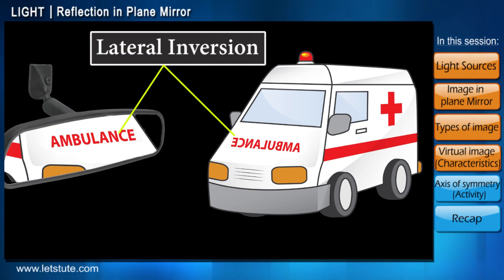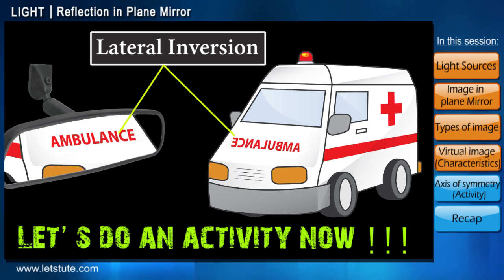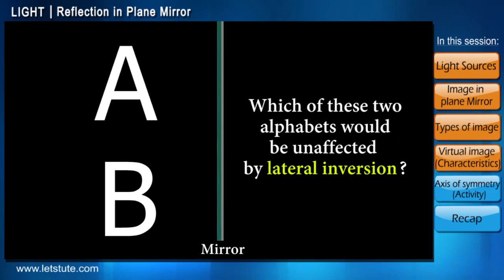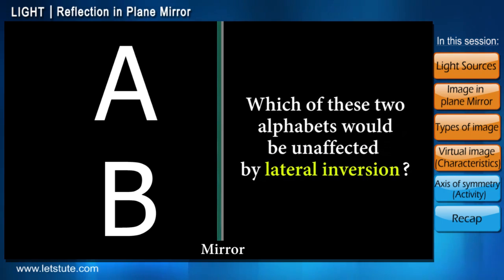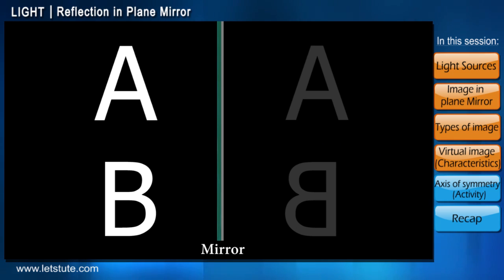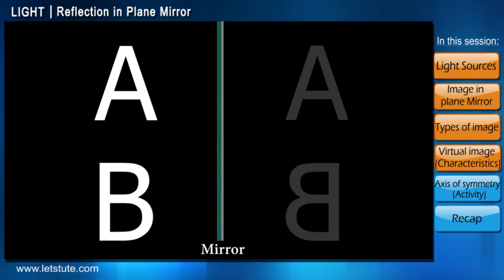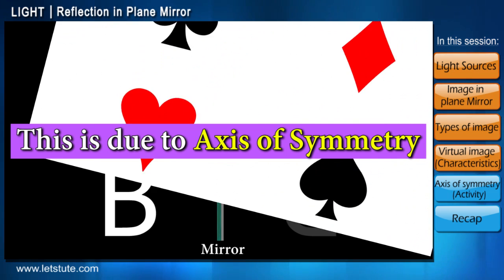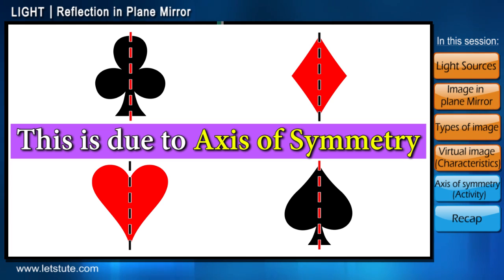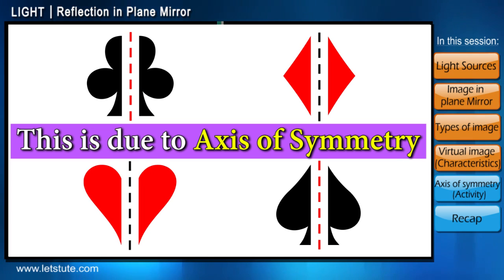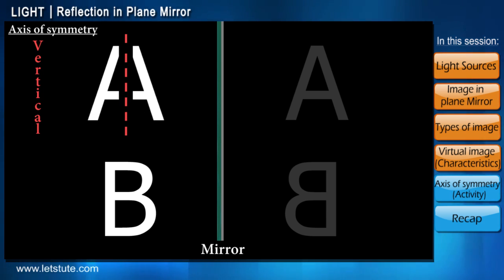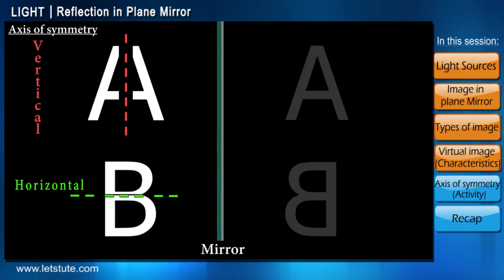Now let's do an activity: let's put alphabets like A and B in front of the mirror. Which of these two alphabets do you think would be unaffected by lateral inversion? When we compare these objects to their images, we see that the letter A remains unaffected while the letter B appears reversed. What comes into play here is something called the axis of symmetry — an imaginary line drawn to divide any shape or figure into two similar or identical halves. The letter A has a vertical axis of symmetry, meaning its right and left halves are similar. The letter B has a horizontal axis of symmetry, meaning its top and bottom halves are similar.